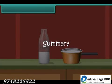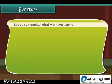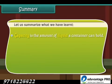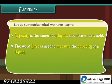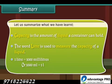Summary. Let us summarise what we have learnt. Capacity is the amount of liquid a container can hold. The word litre is used to measure the capacity of a liquid. 1 litre is equal to 1000 millilitres, or 1000 millilitres is equal to 1 litre.